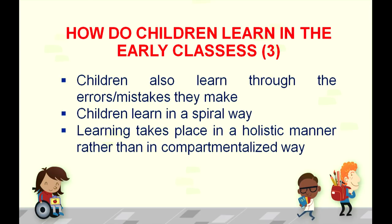Children also learn through their own mistakes. We should give them the opportunity to do activities on their own, find out what errors they have made, and improve accordingly. We should give opportunity for self-reflection and self-learning so that the practice of learning to learn is developed. Children learn in a spiral way — this is another major feature. It means children have their own experiences and prior knowledge which we should use to build new knowledge. Learning is always in a spiral manner rather than a linear manner.